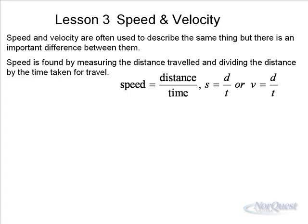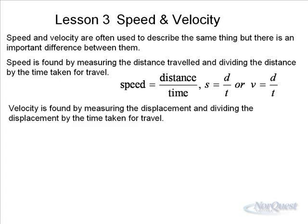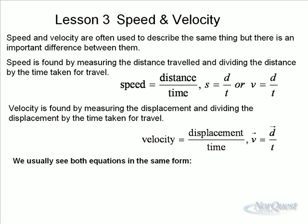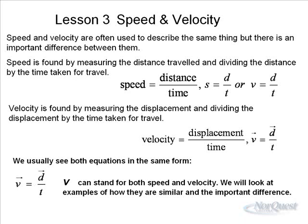The v stands for speed or the v can also stand for velocity. Velocity is found by measuring the displacement and dividing the displacement by the time taken for travel. And so it's essentially the same formula, only instead of the d standing for distance, it stands for displacement. Now you can see that we have drawn a little arrow above the v in the velocity equation. The little arrow indicates direction. Notice that in the speed equation there is no arrow, there is no direction given. But in the velocity equation, there is an arrow over the velocity, there is also an arrow over the displacement.